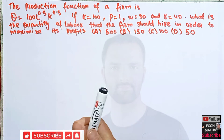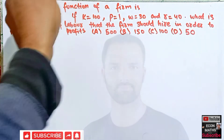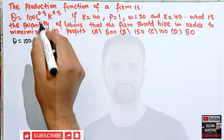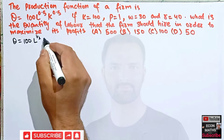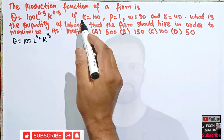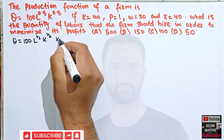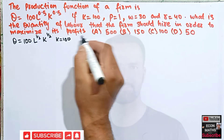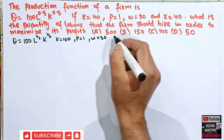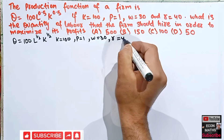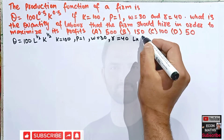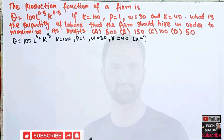Let us see how to solve this. We are given a production function: Q = 100 × L^(1/2) × K^(1/2). The given values are: K = 100, price P = 1, wage rate W = 30, and rental rate of capital R = 40. We have to find the profit-maximizing level of labor.